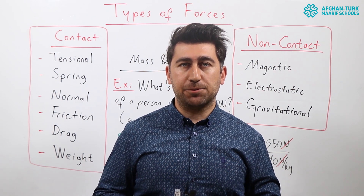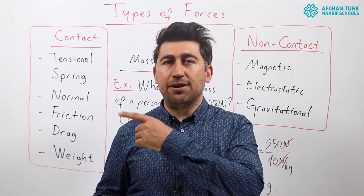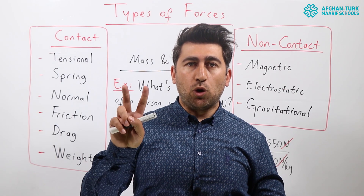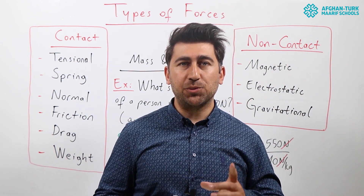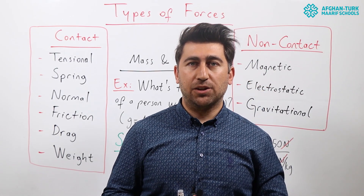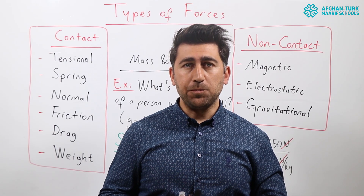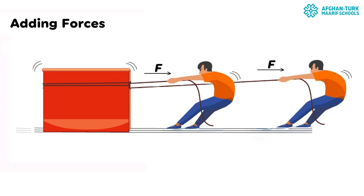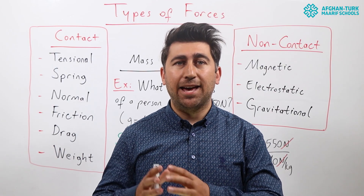We must also decide a reference point. Let's say if the object goes right it's positive, and if it goes left it's negative. There are two operations in combining forces: adding forces and subtracting forces. For adding forces, there is a person pulling a box to the right with force F, so the resultant force is just F. If we add one more person pulling in the same direction, the resultant force becomes F plus F, which is 2F, because the added force has the same magnitude and direction.